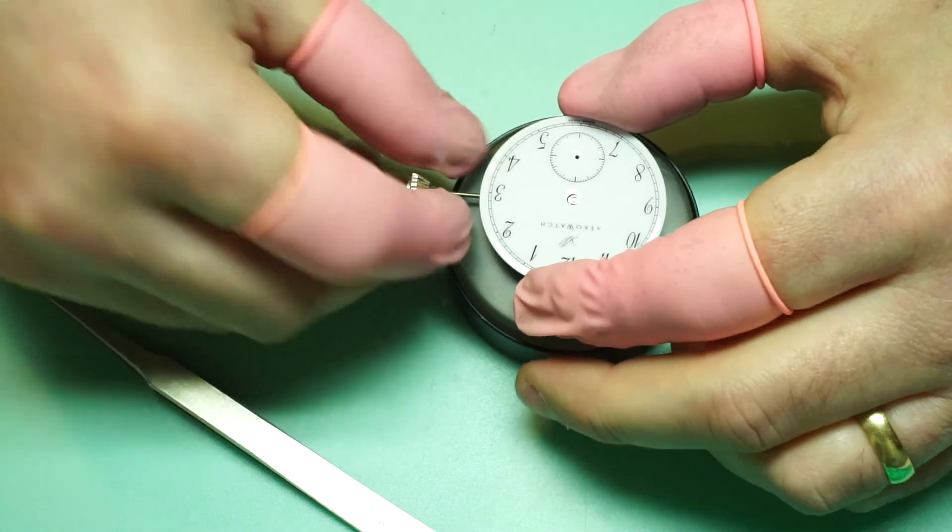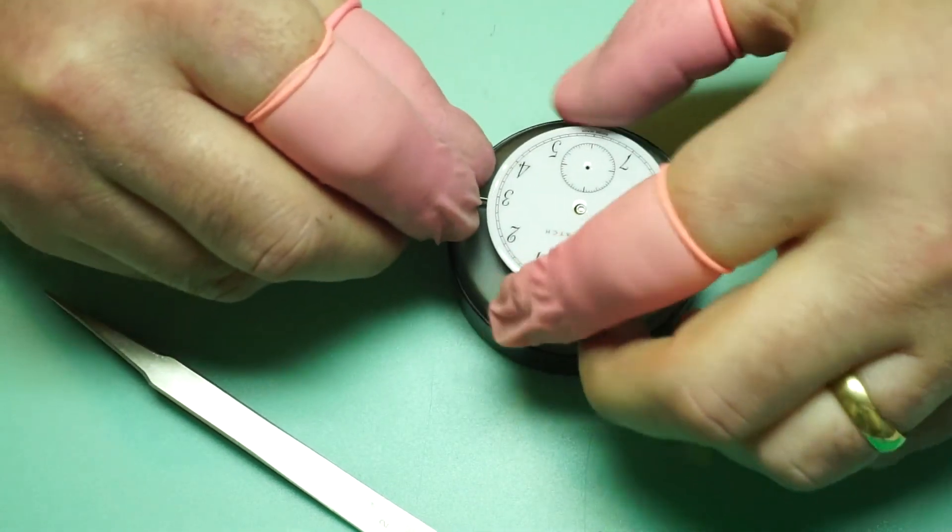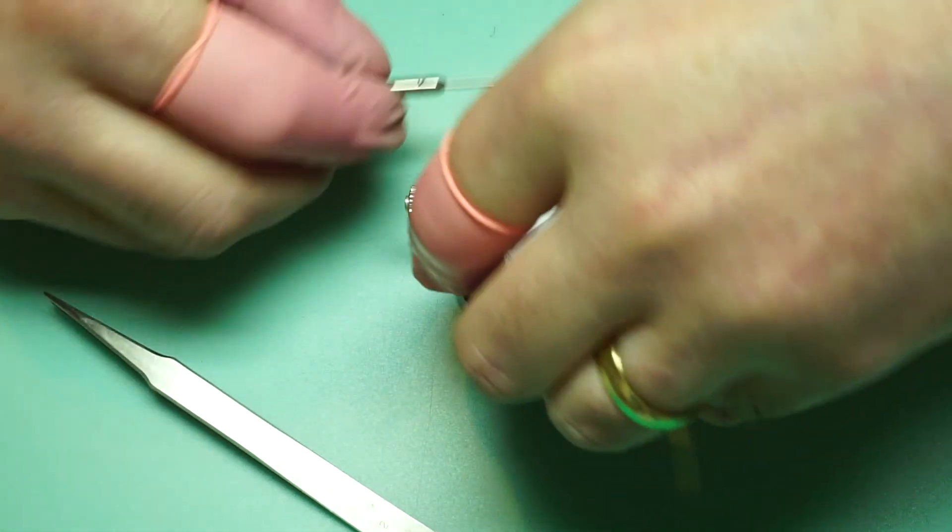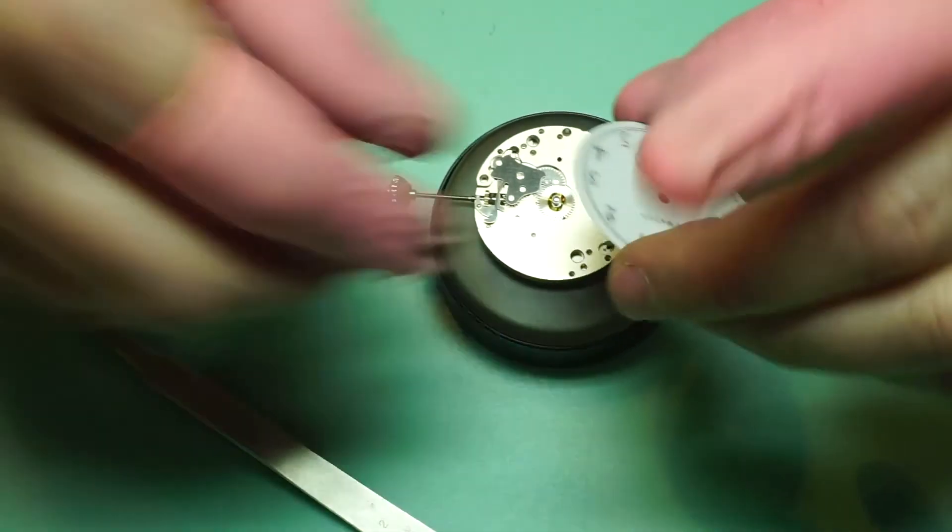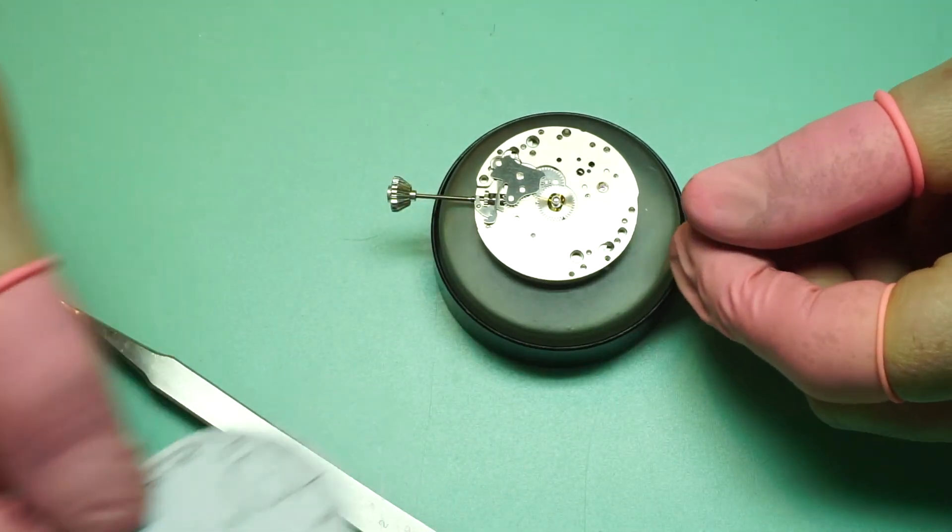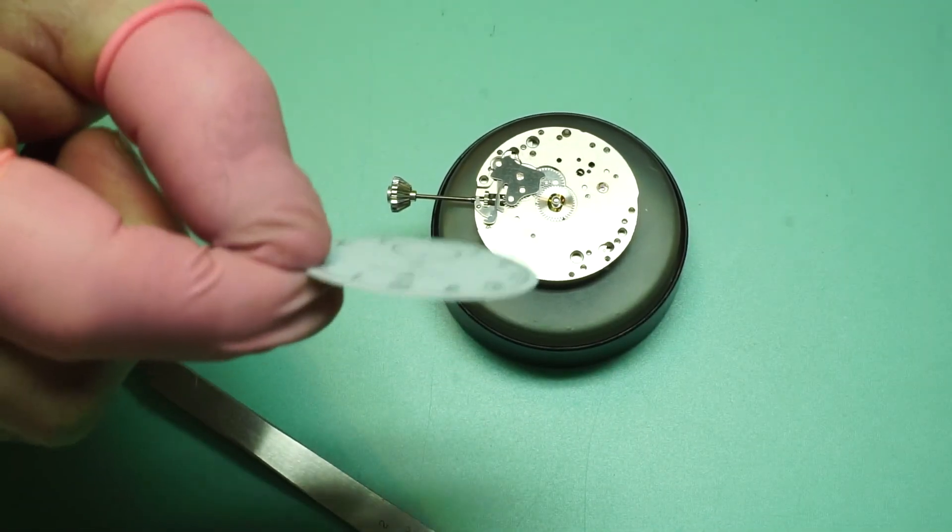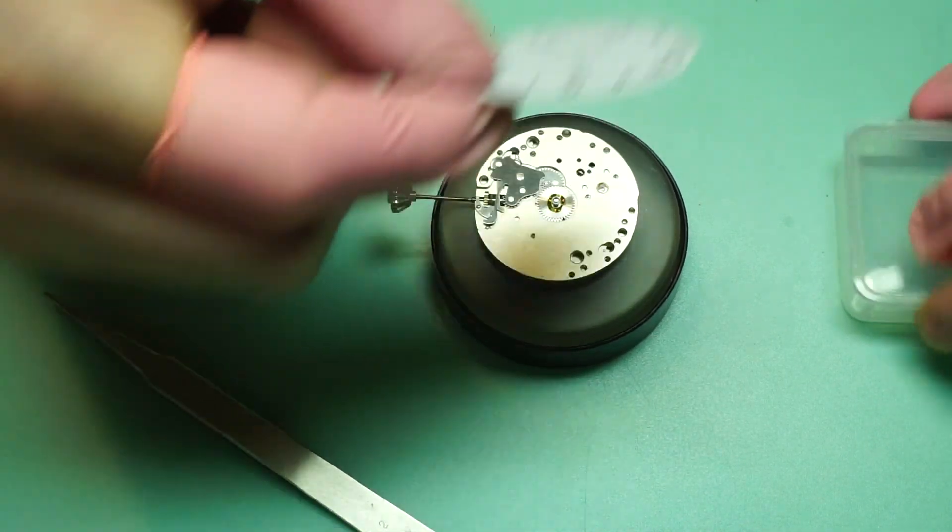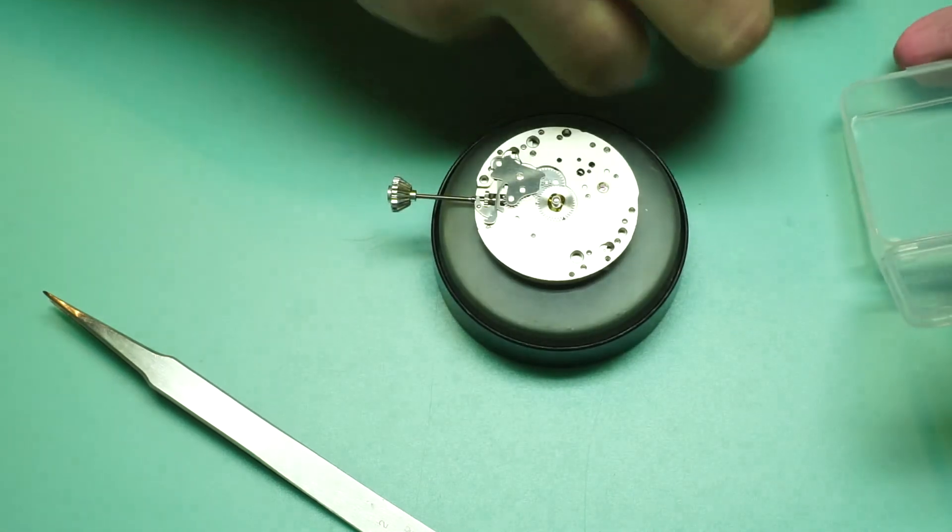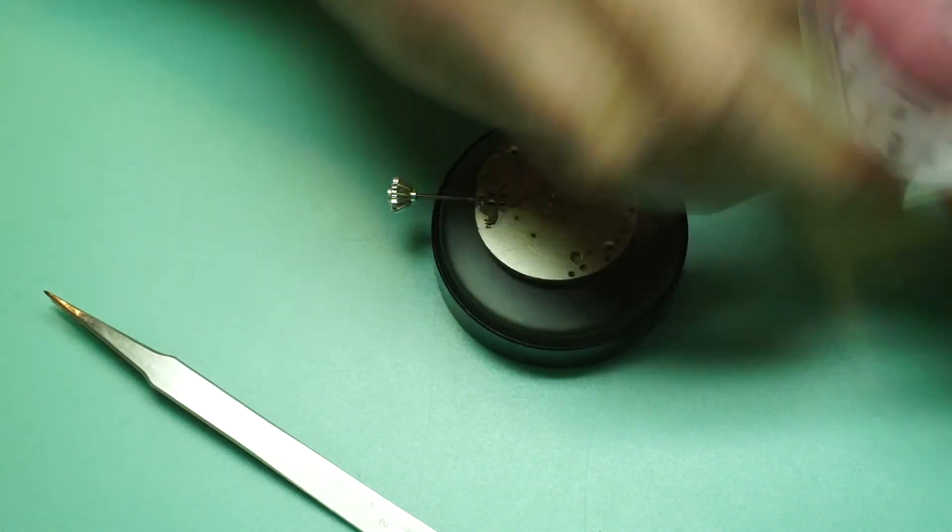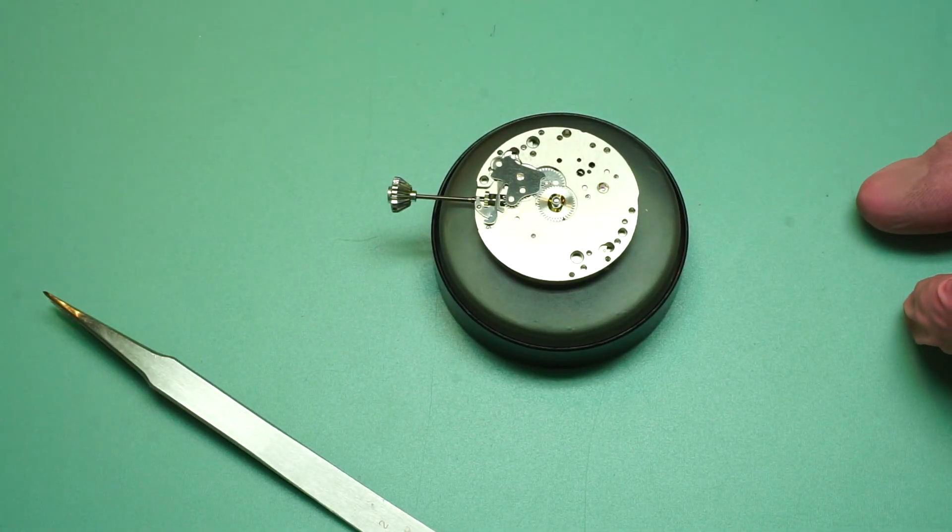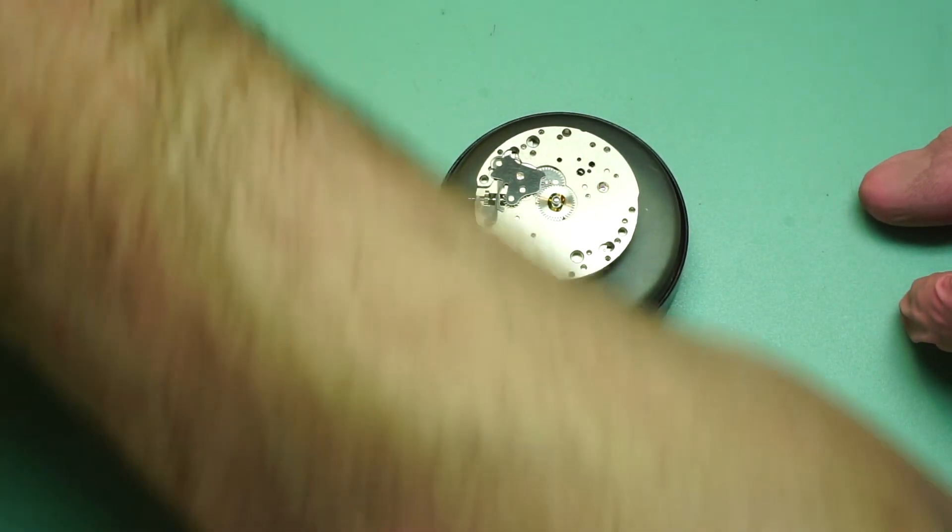So we can turn that over and very carefully lift the dial off the movement. And there's the dial safely removed from the movement. Now if you have one handy, it's a good idea to keep the dial and hands in a little box to make sure they don't get any dust on them or any damage. So if you have a little box like that, then it's always great to use one of those to keep things safe and sound.